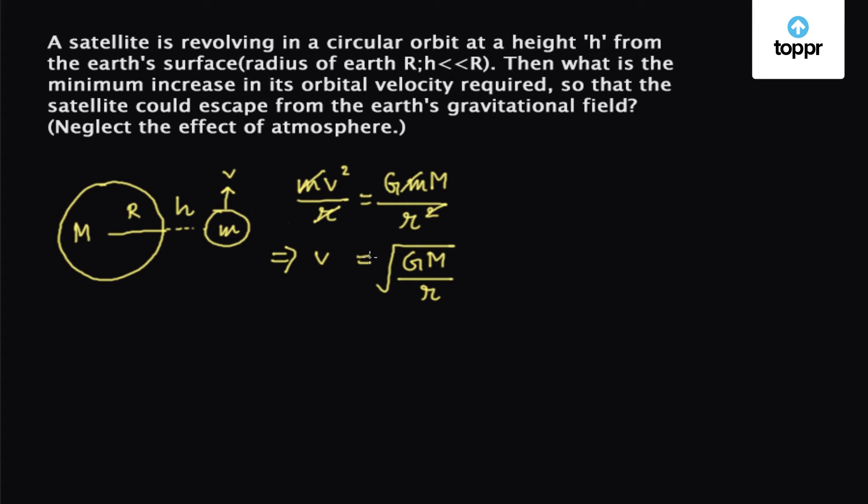Let's say ve is the velocity of the satellite when it escapes the Earth's gravitational field.